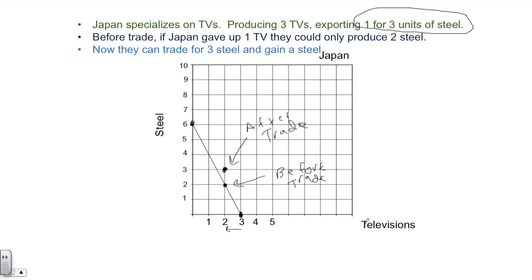For Japan, their ability to trade one television for three steel puts them outside their PPF. Subsequently, this nets them a result of an additional steel that, before trade, they were incapable of producing. So the gains from trade here for Japan are one additional steel that they could not have done on their own.